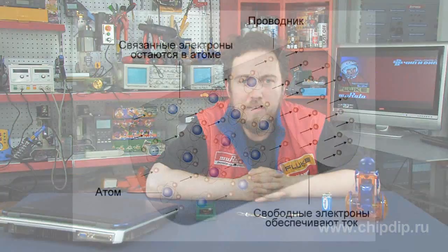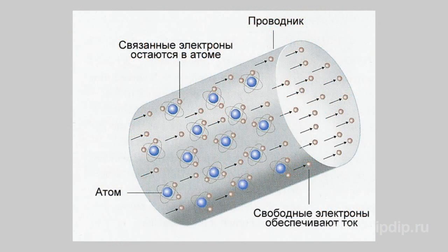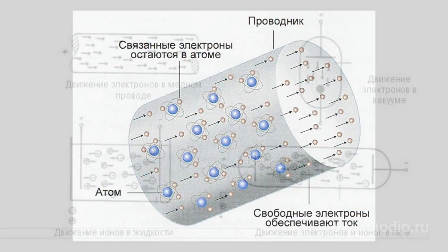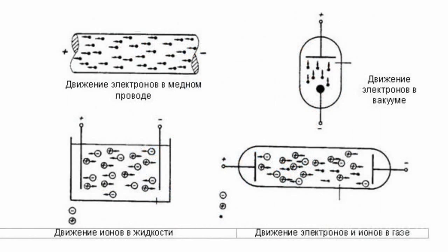The concept of an electric current is usually associated with the movement of electrons. We imagine an electric current as a flow of countless numbers of electrons rushing through wires or through the vacuum of the electron tube. But the electric current is not necessarily the flow of electrons. The electric current is the movement of electric charges, and not only electrons have charges.